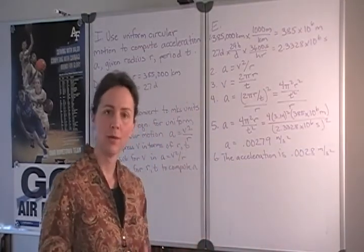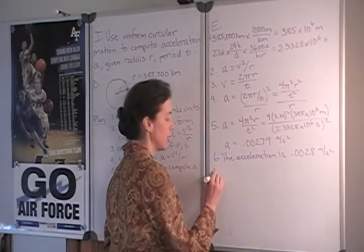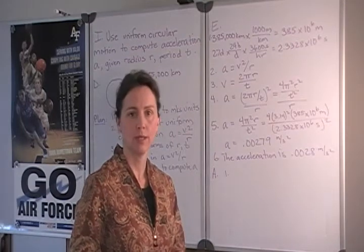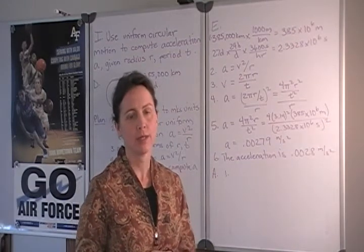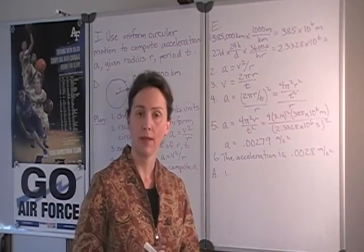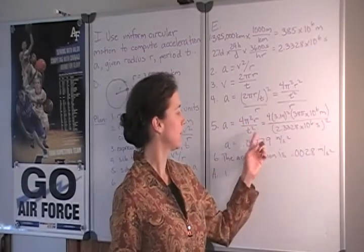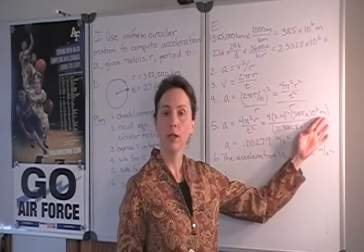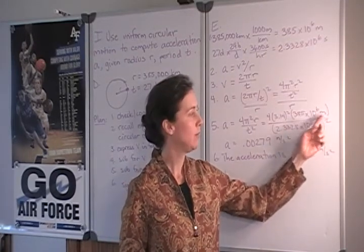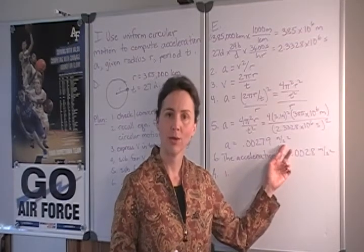We have a value now for acceleration but how do we know whether it's reasonable? As we assess our answer we can take several approaches. The first is to consider units, not whether we're in MKS units, but whether the units that we come out with in our calculations match the type of thing we're trying to compute. As we substituted for the radius and for the period, we included units of meters and of seconds. So we come out with meters per second squared for acceleration and that is the unit that we would expect.